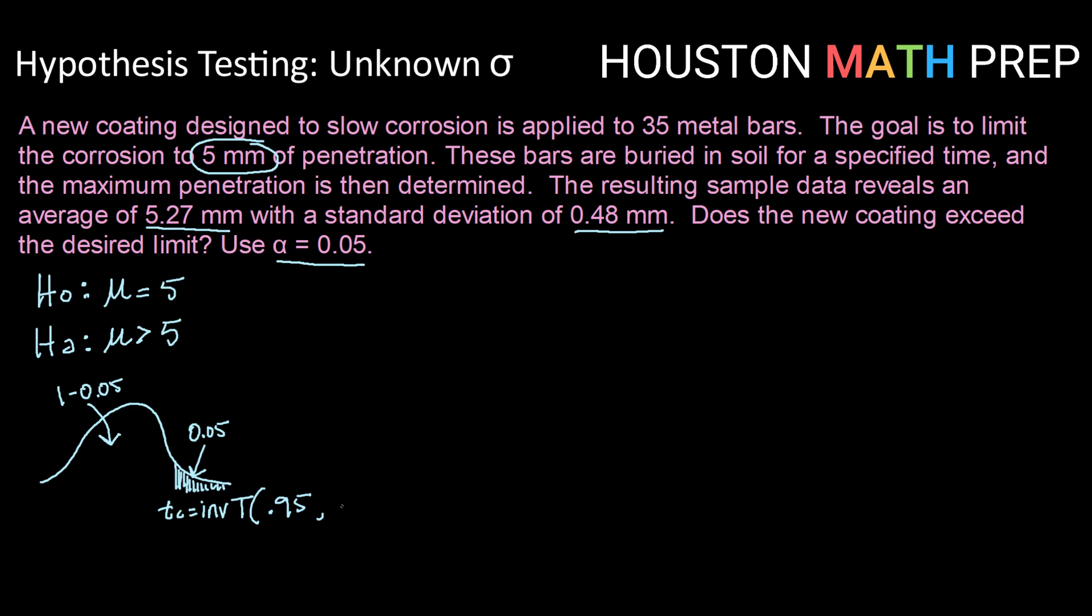And then we need to give inverse t the number of degrees of freedom. Remember that with the student t distribution our degrees of freedom are always n minus 1. So if we have 35 metal bars in our sample, then our degrees of freedom will be 35 minus 1 or 34.